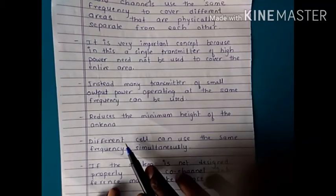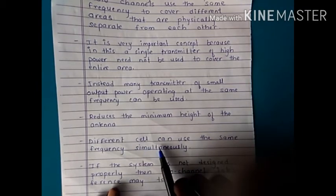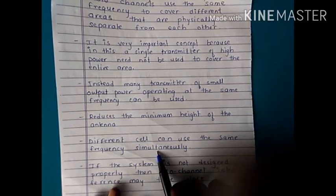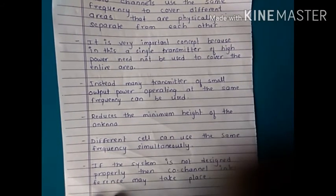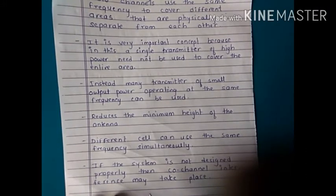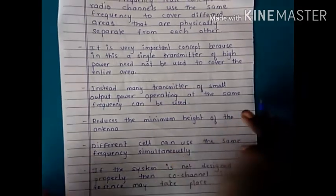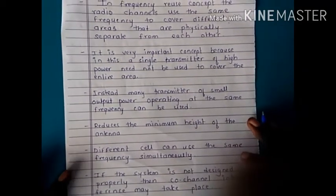This reduces the minimum height of the antenna. Different cells can use the same frequency simultaneously. These are the advantages of frequency reuse concept. If the system is not designed properly, co-channel interference may take place. This is one of the disadvantages of this concept.